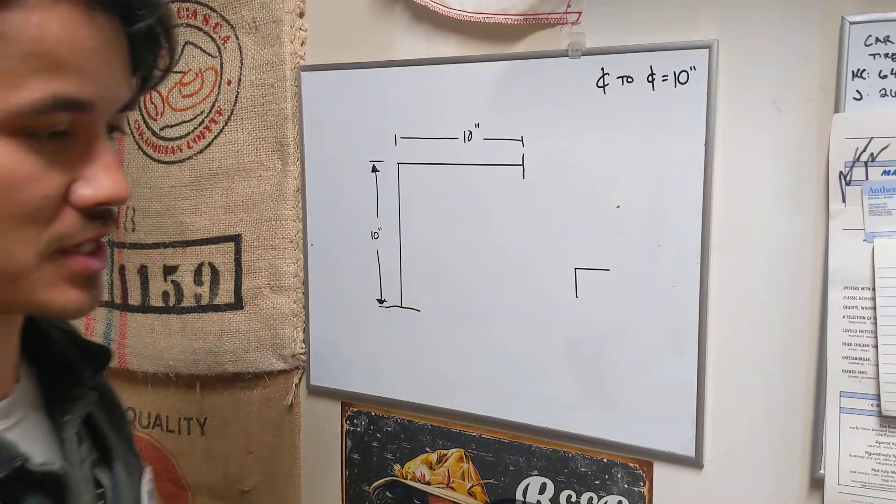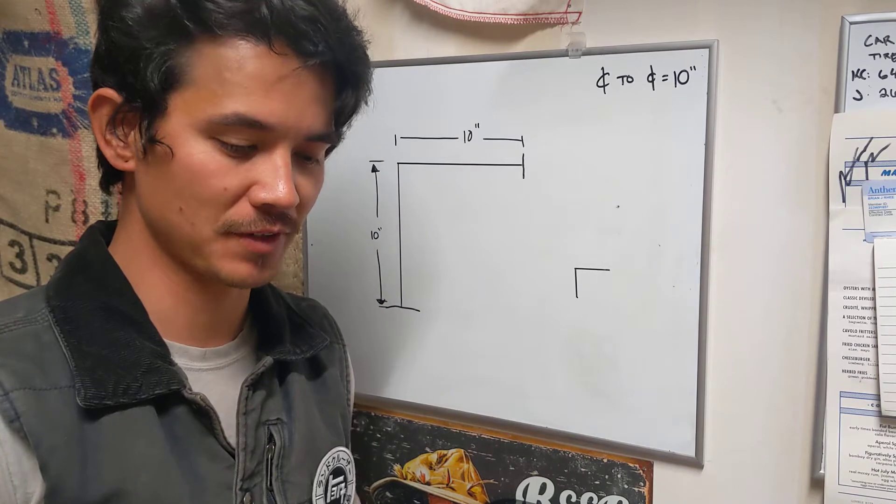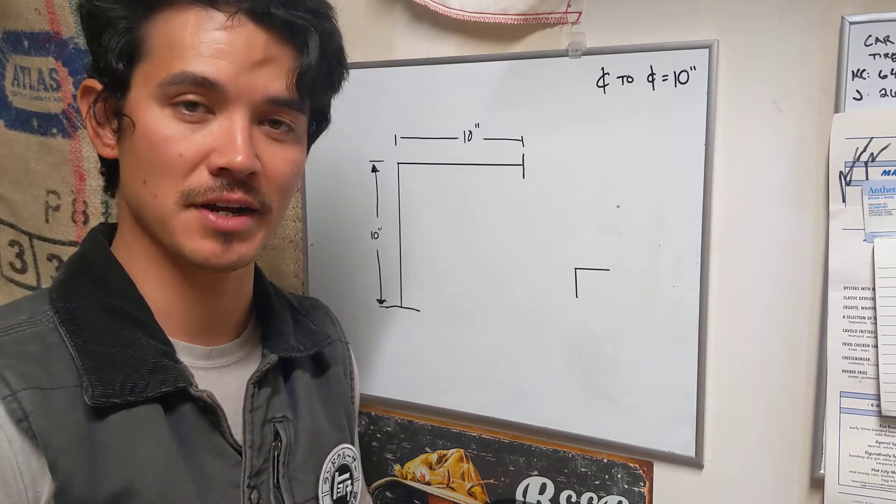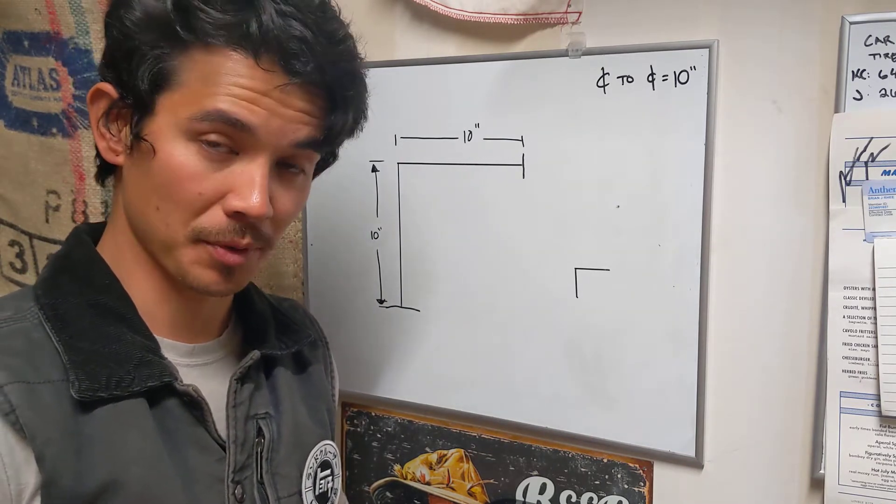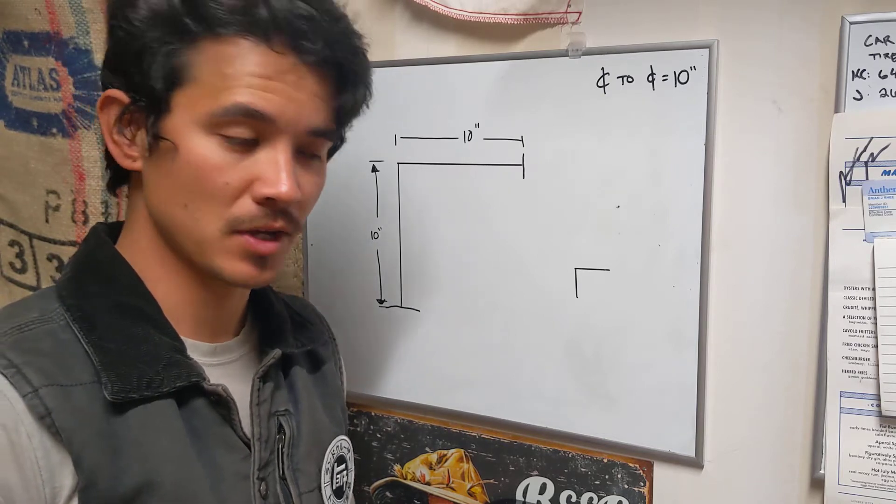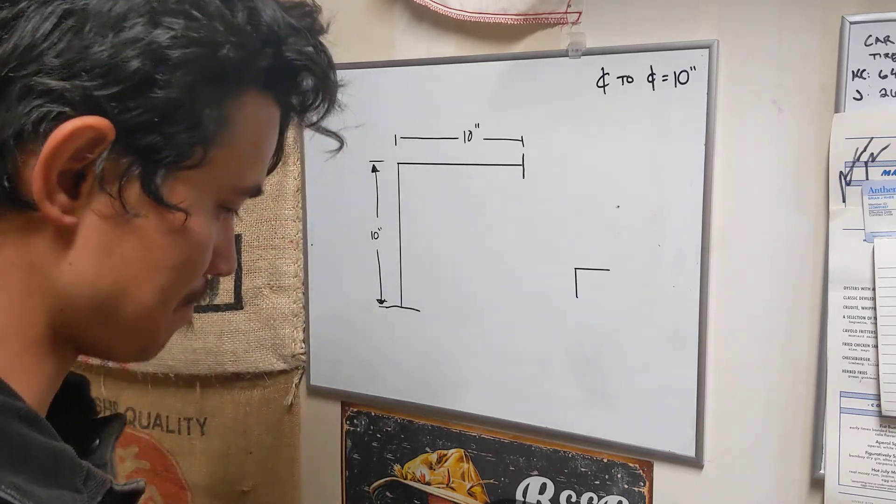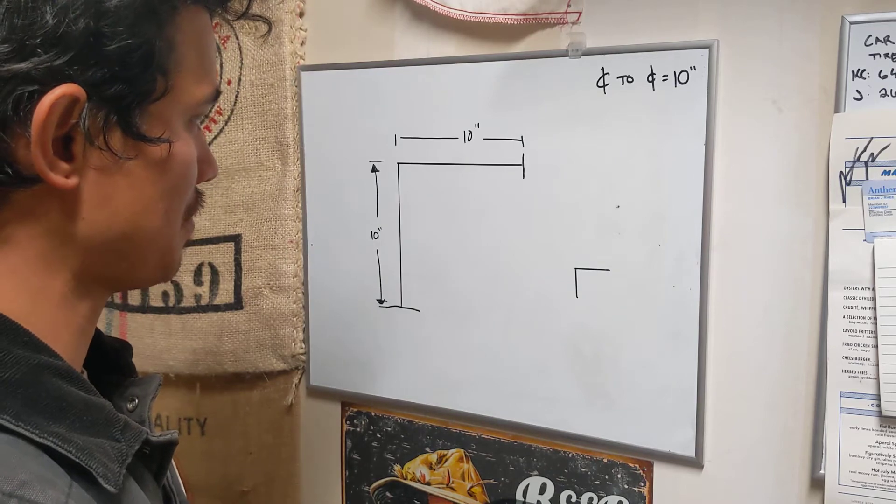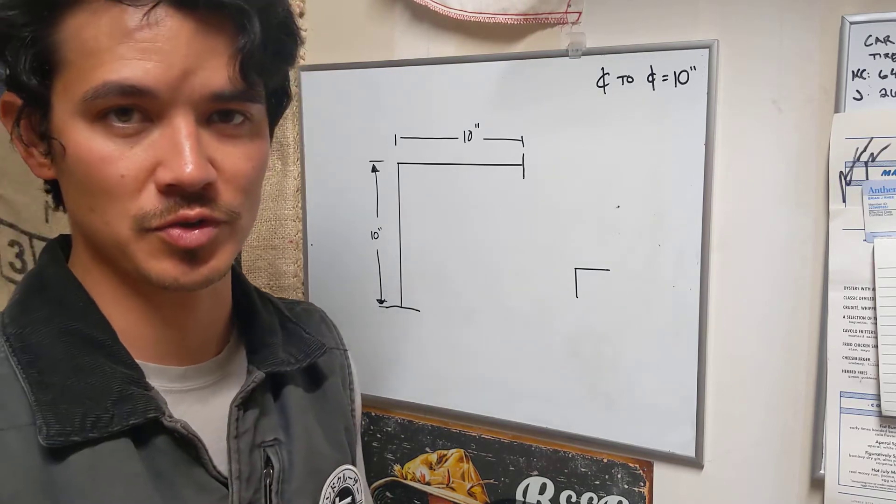Usually you're going to deal with takeoff and makeup and the fittings you'll mostly come across is going to be cast iron, could be SV, copper, and also PVC. So those are your main pipe materials that you're going to use takeoff and makeup.